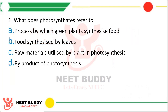Question 1: What does photosynthates refer to? Option A: process by which green plants synthesize food. Option B: food synthesized by leaves. Option C: raw materials utilized by plants in photosynthesis. Option D: byproducts of photosynthesis. The correct answer is option B — food synthesized by leaves is called photosynthates.